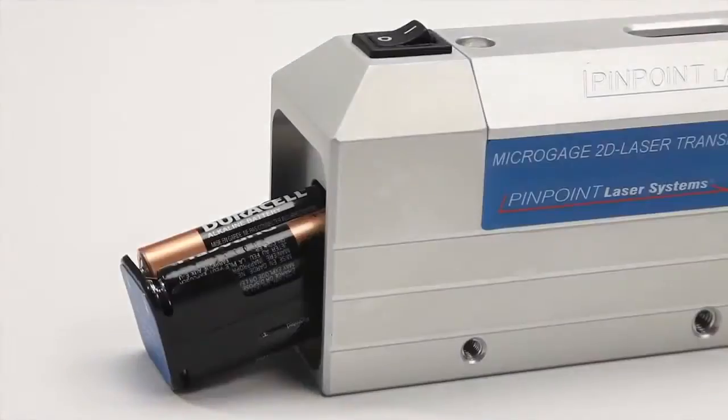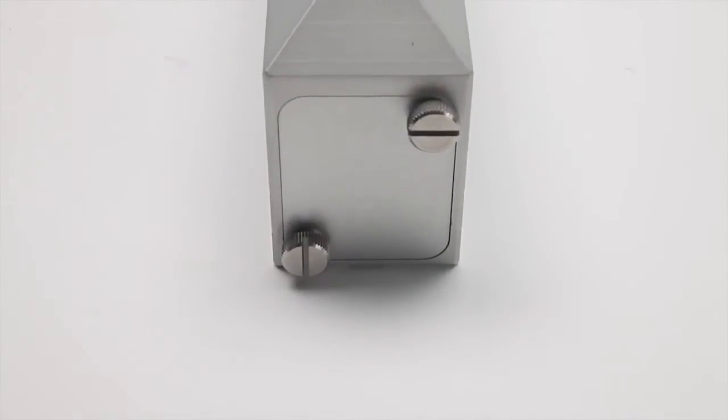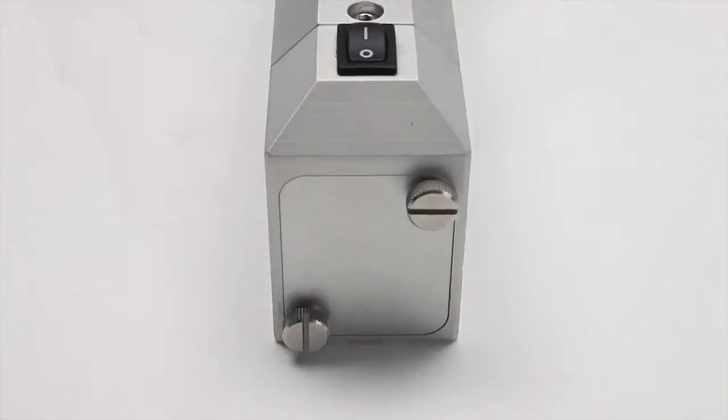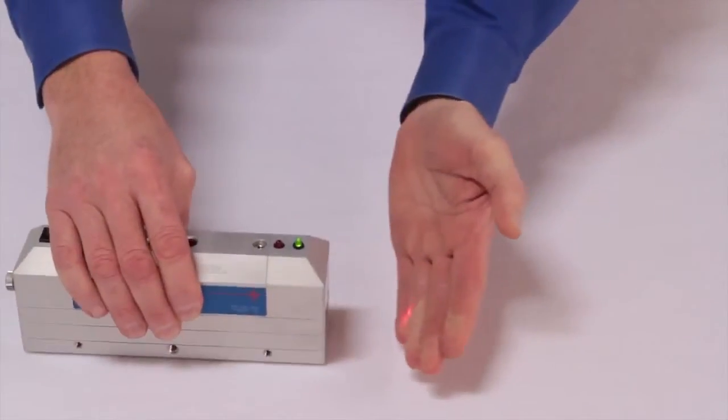Four AA alkaline or rechargeable batteries are simply inserted into the back of the laser transmitter. One set of batteries will provide 20 or more hours of continuous operation. A toggle switch on top of the laser activates the laser beam, which exits the end of the laser housing.